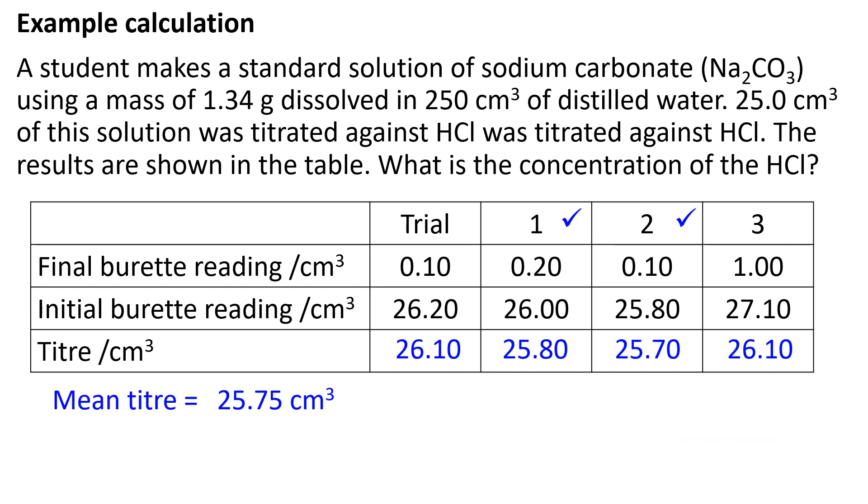First, we have to complete the table of results. Remember, all burette readings must be recorded to two decimal places. Titrations one and two are concordant, so the mean titer is 25.75 cm³.